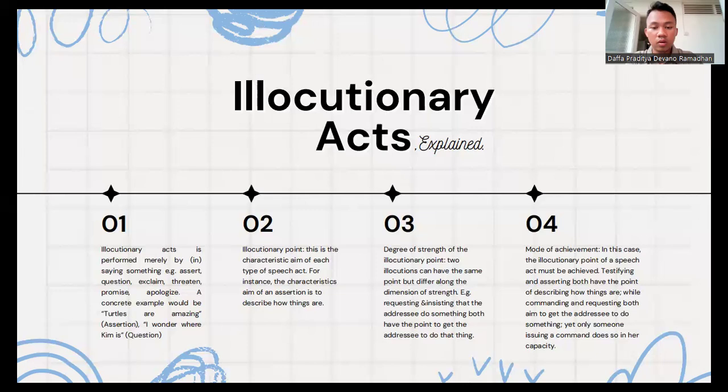Thirdly is degree of strength of the illocutionary point. Two illocutions can have the same point but differ along the dimension of strength. For example, requesting and insisting that addressee do something both have the point to get the addressee to do that thing.